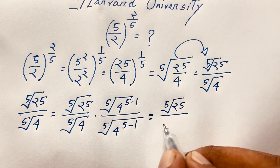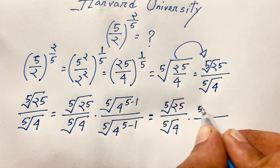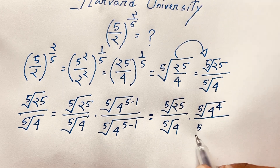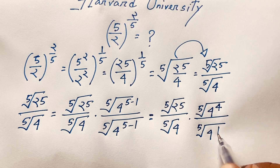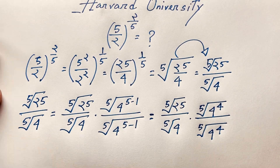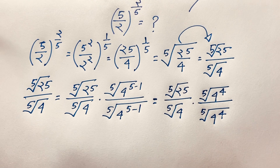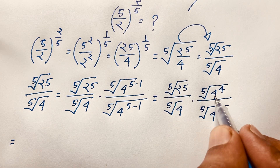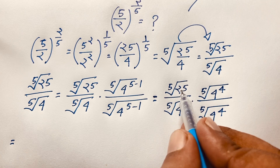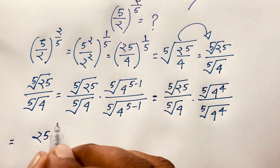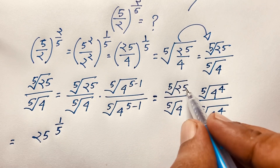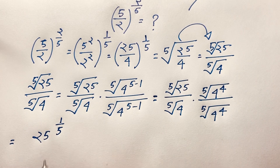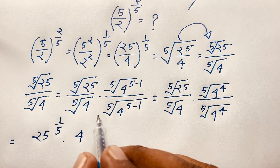So (5th root of 4)^(5−1) = (5th root of 4)^4 = 4^(4/5). Now converting using n-th root of a = a^(1/n), the 5th root of 25 = 25^(1/5). Our expression becomes 25^(1/5) × 4^(4/5) over 4.